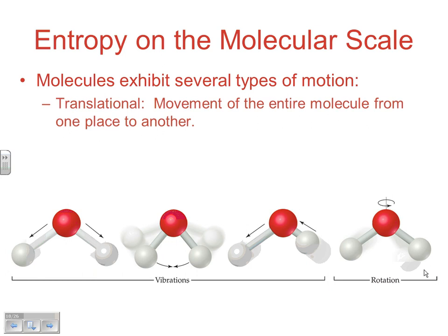Molecules can exhibit several types of motion. First, you'd have translational motion, which is movement of the entire molecule from one point to another. That's a type of movement energy. So if it's getting from point A to point B, that's translational motion.